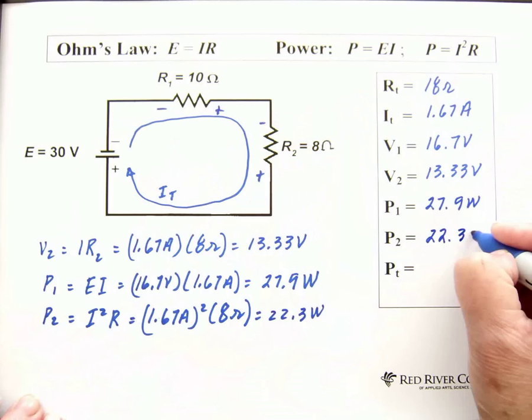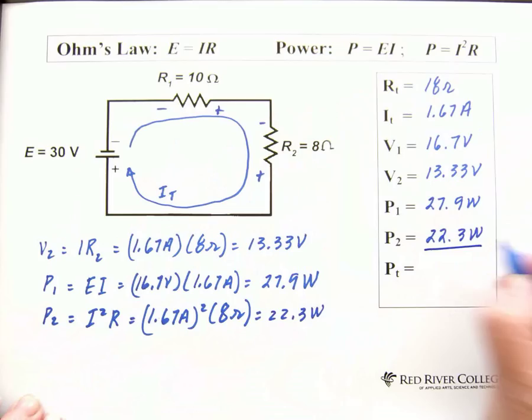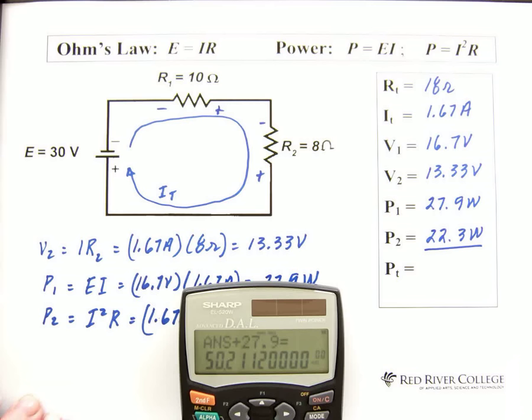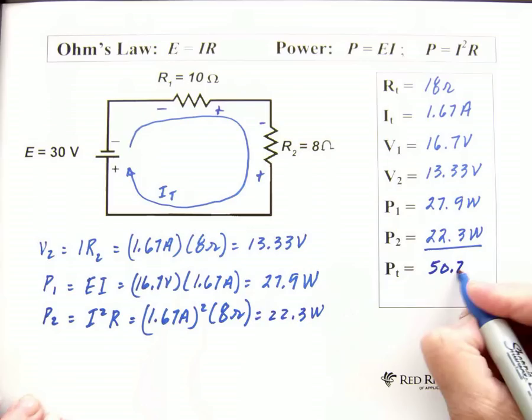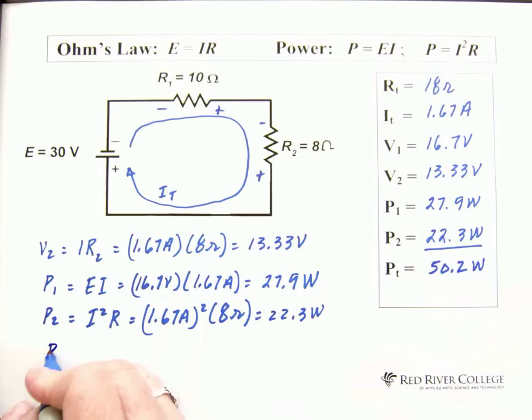And if we add these two together, we'll have total power in the circuit. So, 22.3 plus 27.9 equals 50.2 watts. Now, a good thing to do when you're working through these is do a check. So, we're going to do a check.